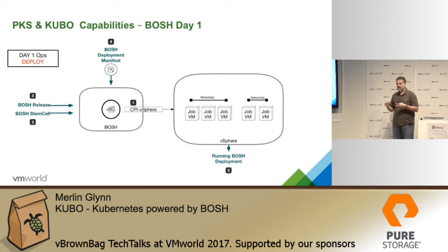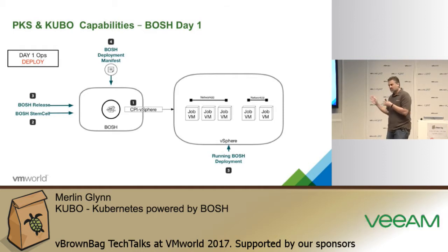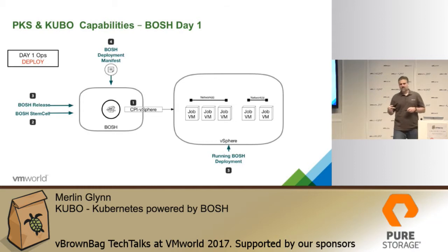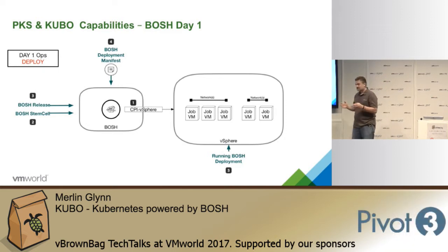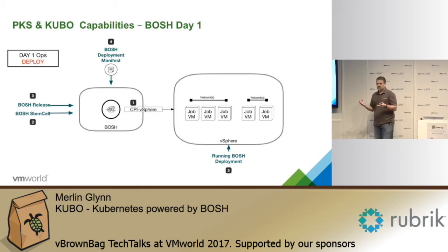BOSH actually has quite a few CPIs, so BOSH can deploy the same software — Kubernetes — on GCP, on AWS, on Azure. But we're focusing on the vSphere CPI because there's special sauce to make that Kubernetes deployment enterprise-grade. The second component is a stemcell. A stemcell is, in essence, a bare minimum OS distribution — predominantly an Ubuntu distribution. It's an Ubuntu VM stripped down as a VMDK with a BOSH agent on it. That's really all that's in the stemcell VM.